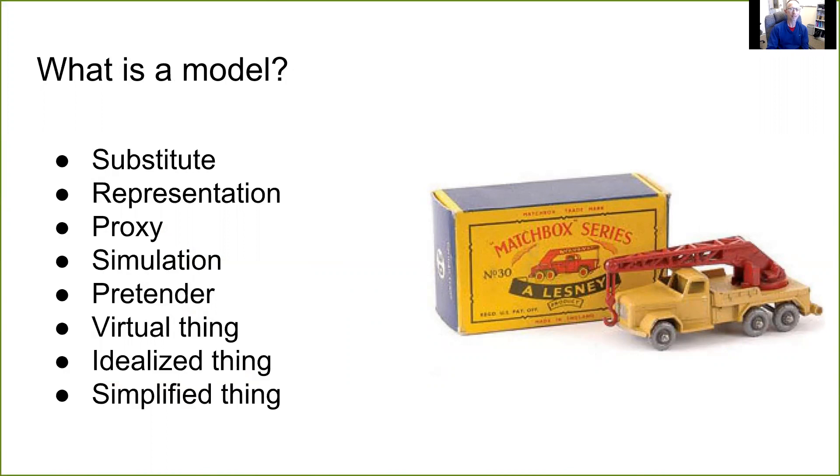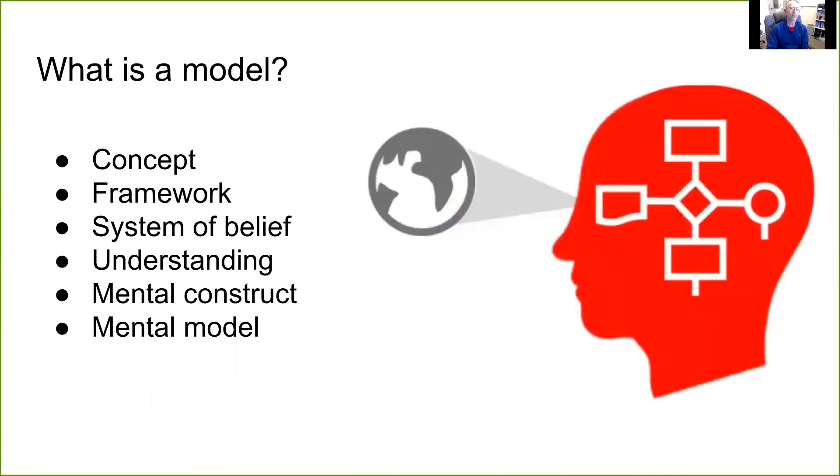So let's go from these examples to some words we might use to say what is a model. A model is a kind of substitute for something else. It's not the real thing. It's a representation, a proxy, perhaps a simulation, perhaps it's pretending to be the other thing. So I used to play with matchbox cars like this one. The pickup truck is a real object but it is a pretend of a real pickup truck. Another word we like to use nowadays is virtual. So it is a virtual thing or idealized thing, perhaps. Maybe often a simplified thing from the real thing.